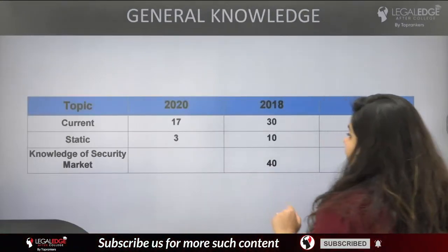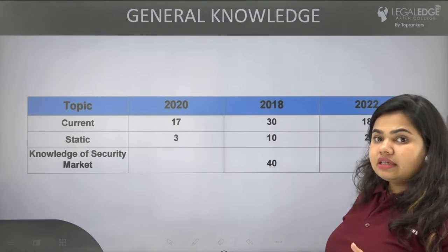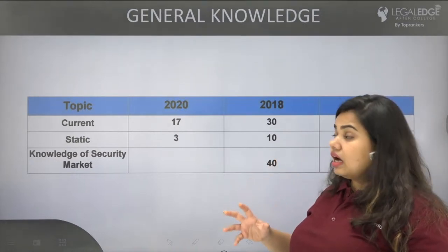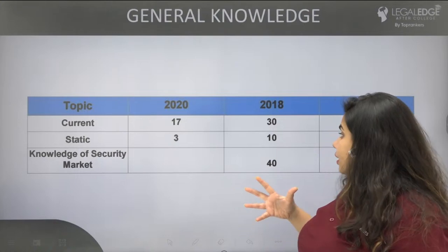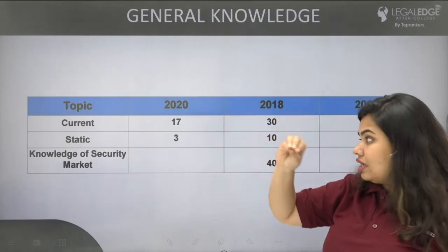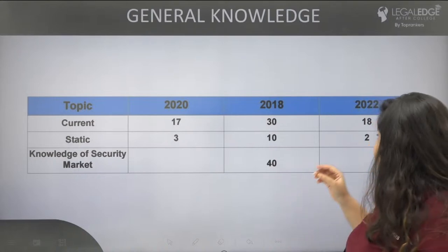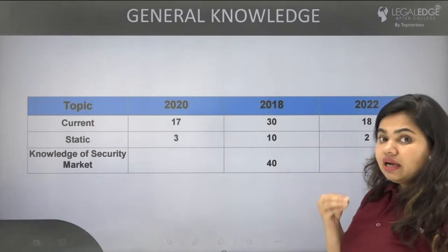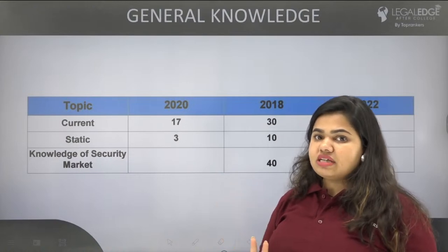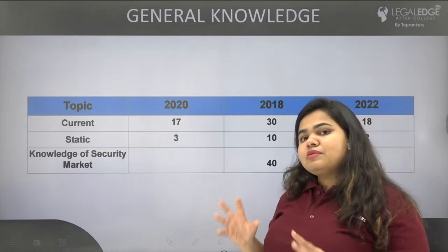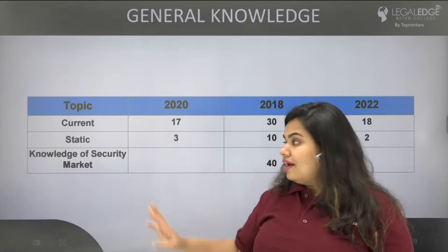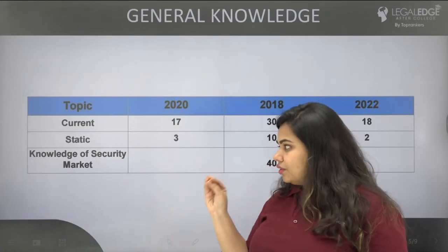Moving to General Knowledge: current GK is the most important part. In 2020, there were 17 questions from general knowledge. In 2022, there were 18 current affairs questions and only 2 static GK questions. So if you leave static GK and focus on current affairs, that is sufficient.